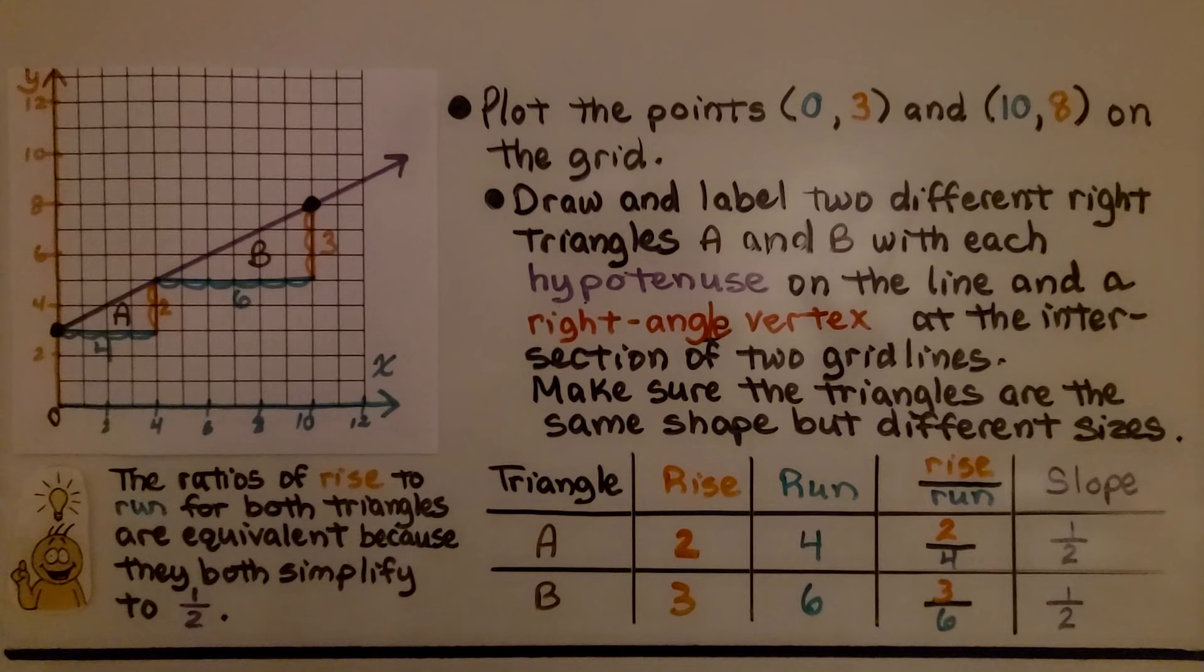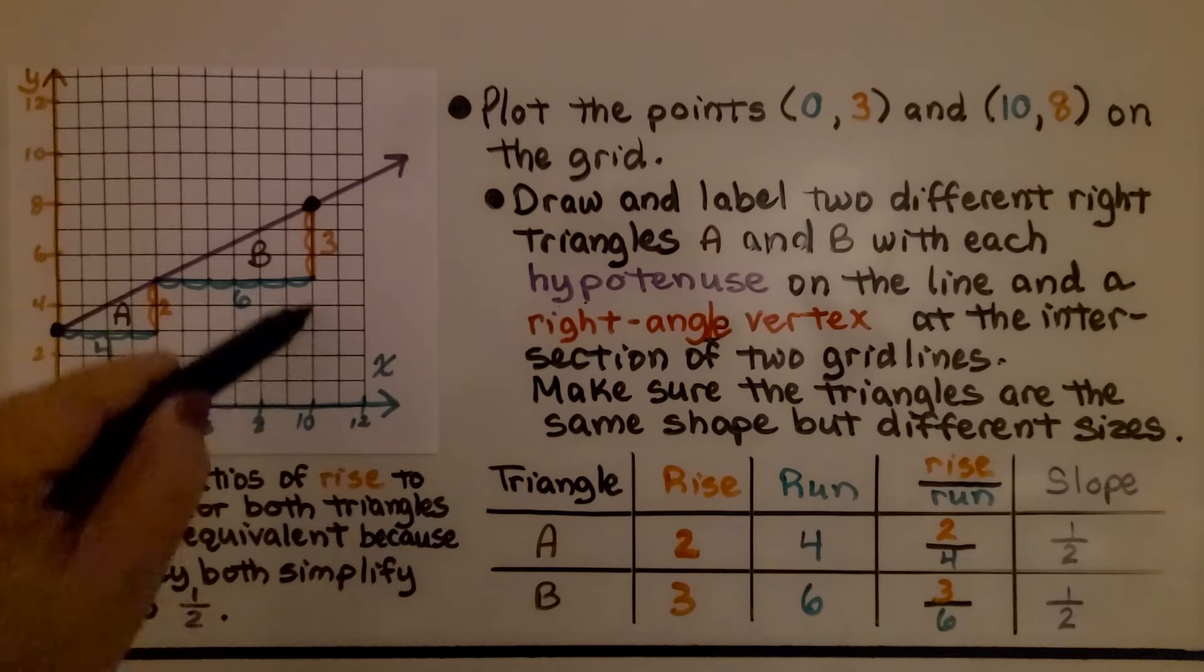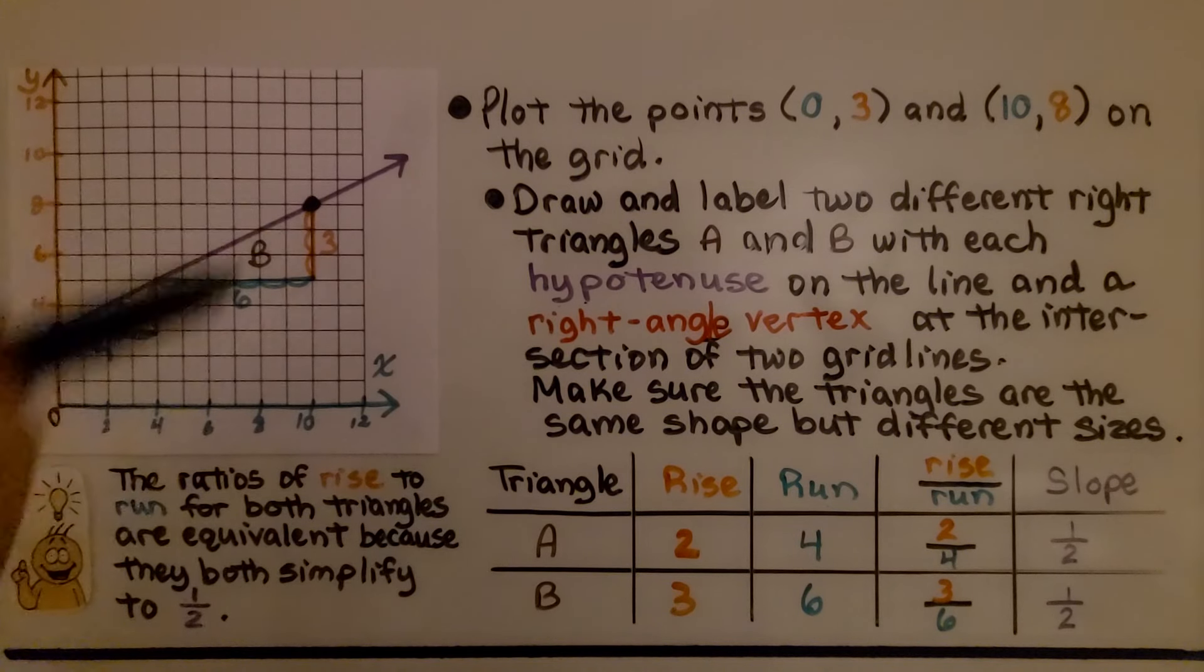Here it's telling us to plot the points 0, 3, and 10, 8 on the grid. So we do. We have 0 for the x, so that's going to be here, and 3 for the y is going to put us here. That's our first point. Then we have 10, 8. Here's 10, and here's where it meets 8. That's our second point.